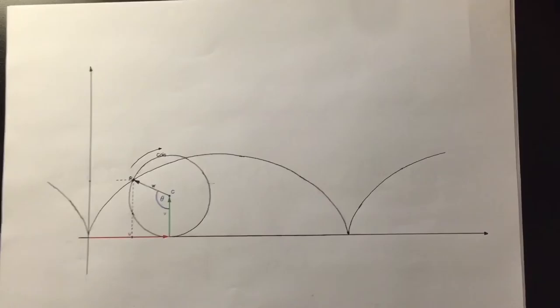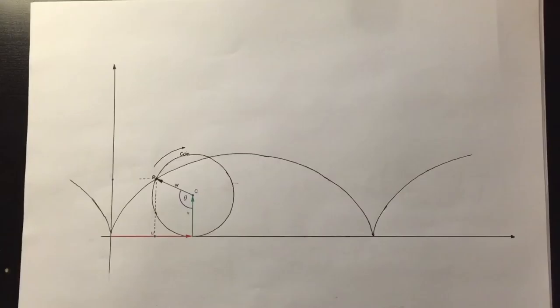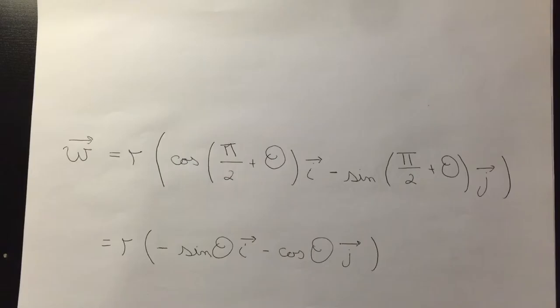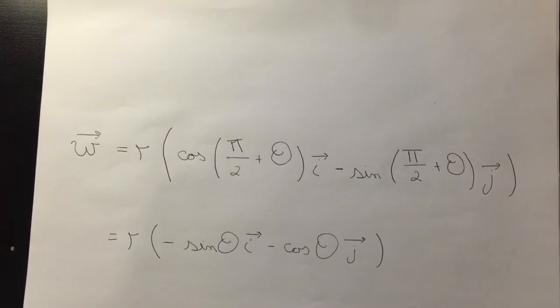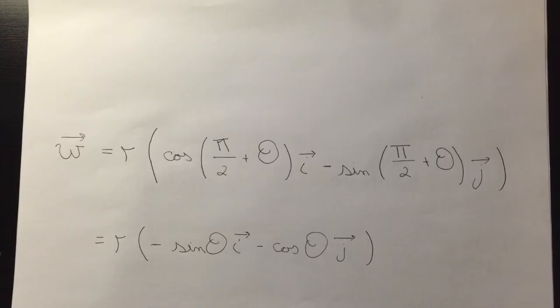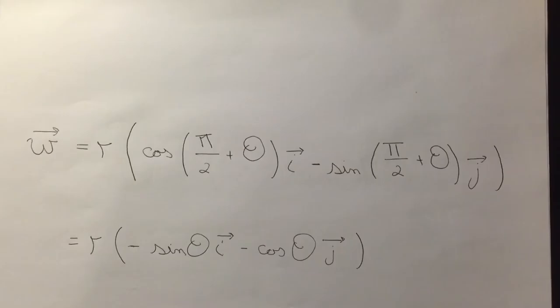In order to start at point 0 minus 1, we must add pi over 2 in the argument of the trigonometric functions. We can write that vector w is equal to r cosine of pi over 2 plus theta vector i minus sin pi over 2 plus theta vector j. This is then equal to r minus sin theta vector i minus cos theta vector j.